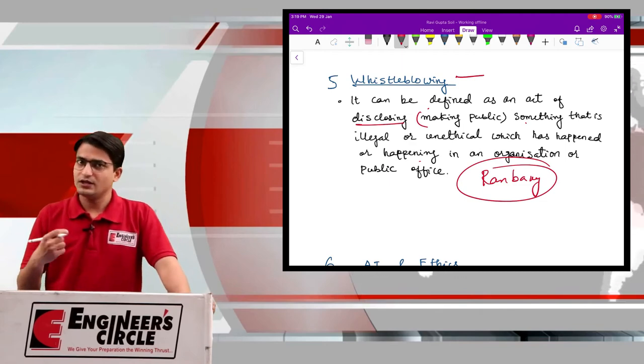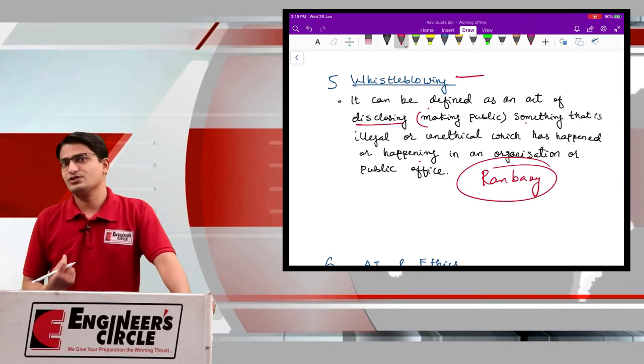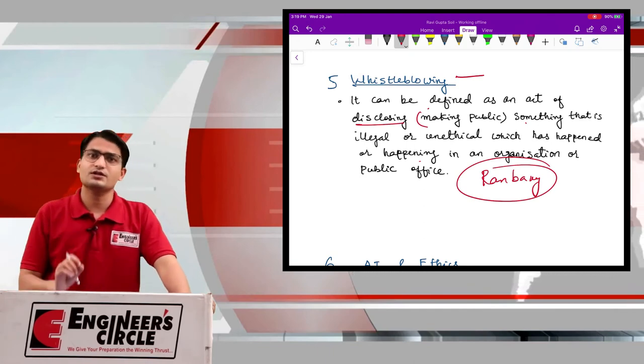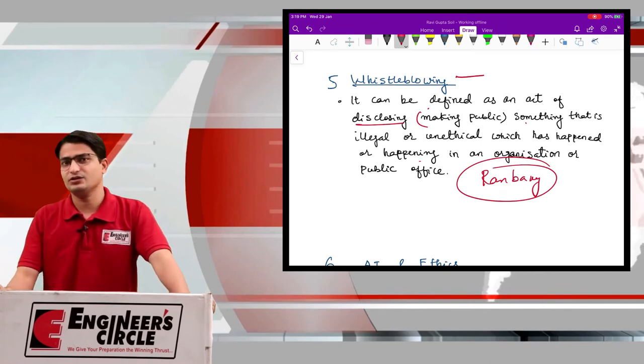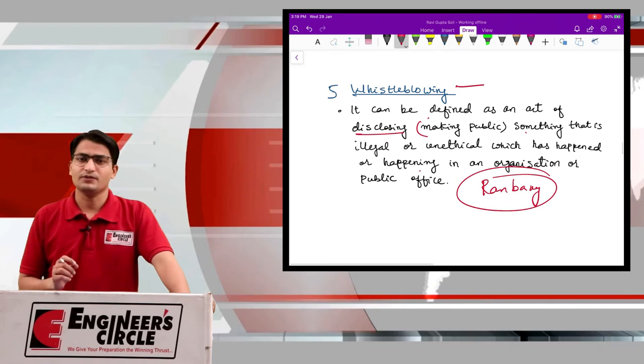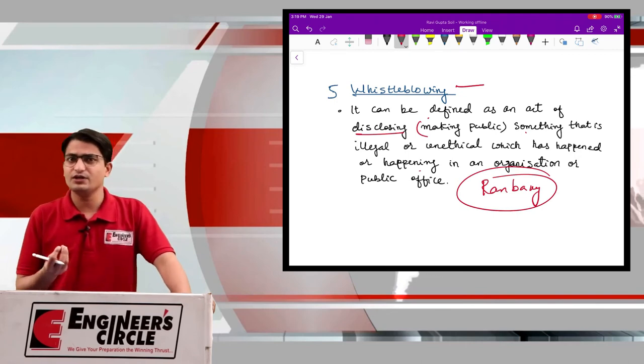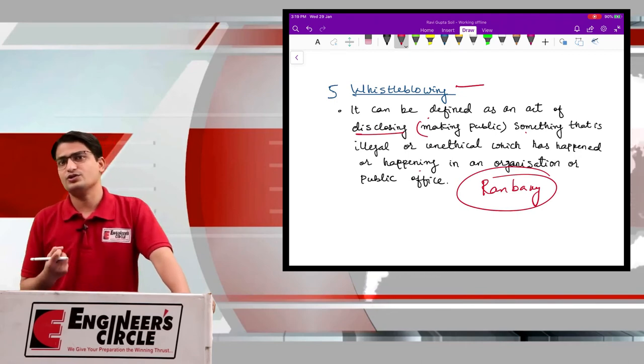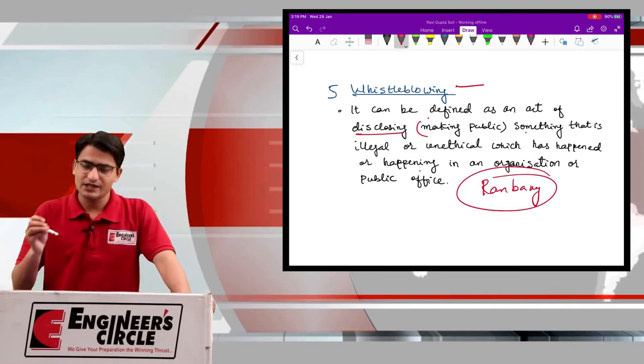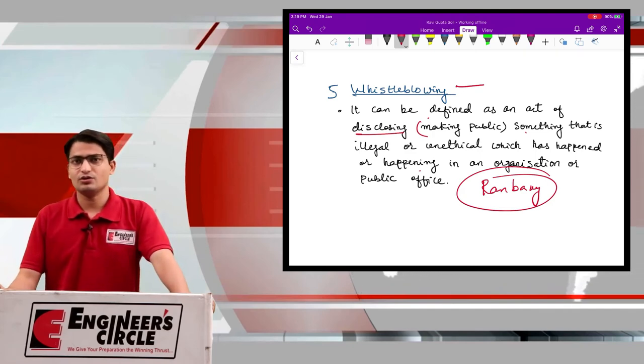So here, the employee of the private organization is disclosing to the outside world about some unethical conduct happening in the organization. This is called as whistleblowing. So this is very much relevant to engineering profession also. Many times during engineering, unethical conduct occurs.